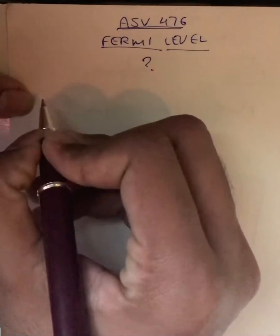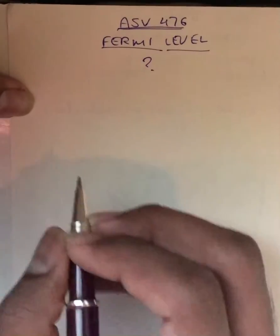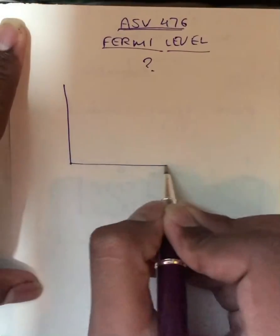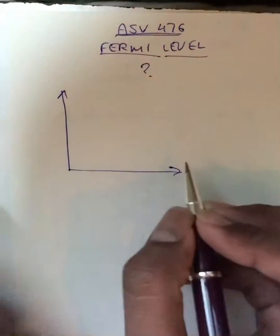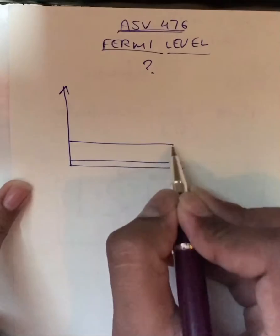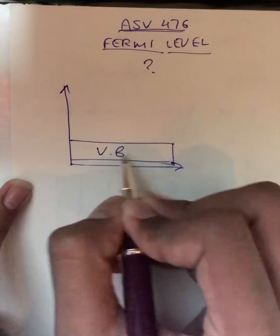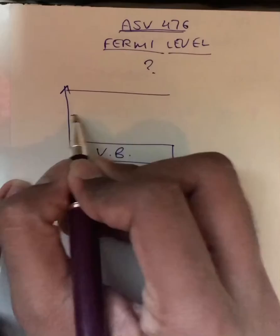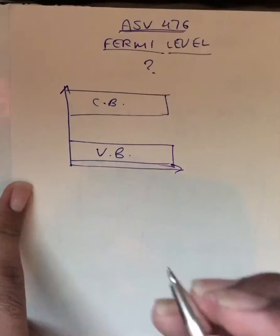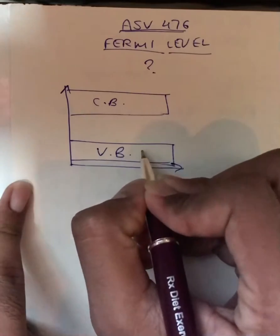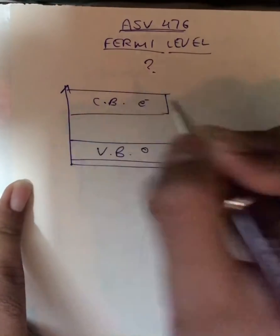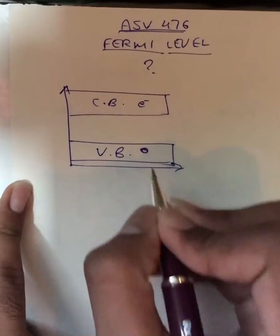So now first we will see the Fermi level in intrinsic semiconductor. So this is our valence band. This is the conduction band. Now we all know that electrons from here go into the conduction band and a hole is created over here.